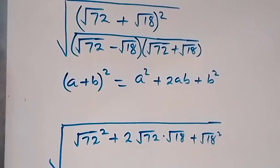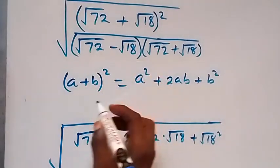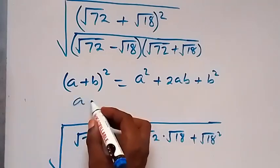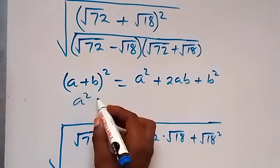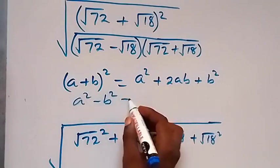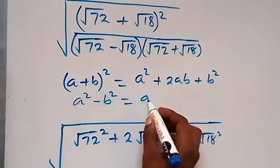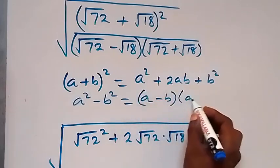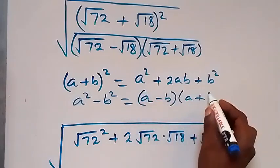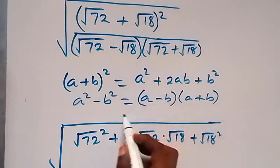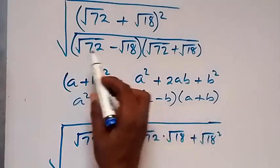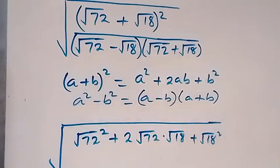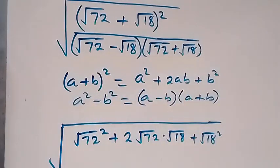The denominator follows the difference of squares pattern: (a minus b)(a plus b) equals a squared minus b squared. So we can simply write the denominator as root 72 squared minus root 18 squared.